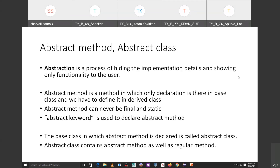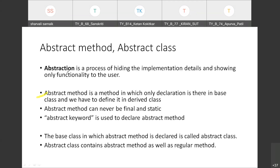Now we have abstract methods as well as abstract class. An abstract method is a method in which only declaration is there in the base class and we have to define it into a derived class. For example, in the base class I will only declare what I want, but how I am going to implement it — that I am going to define into a derived class. So only declaration will be in the abstract class and the definition will be in the derived class.